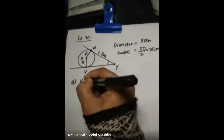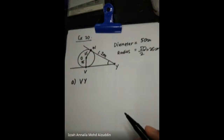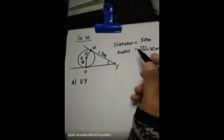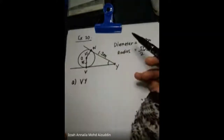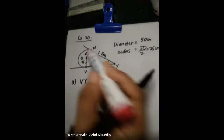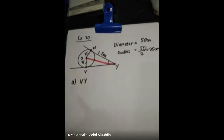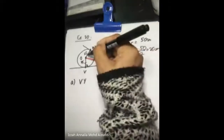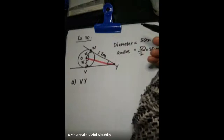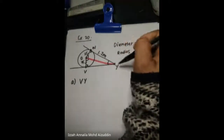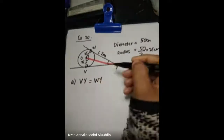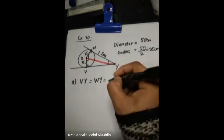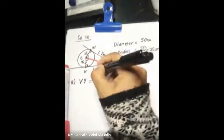This is the radius, and here is also the radius. The angle R equals this angle and the lengths are also equal, so VY equals WY. Therefore VY equals 1.2 meters.